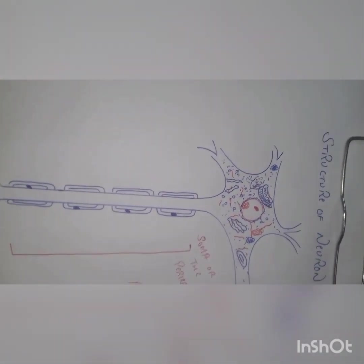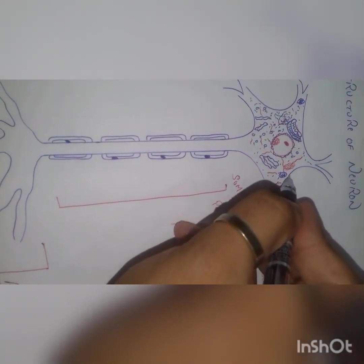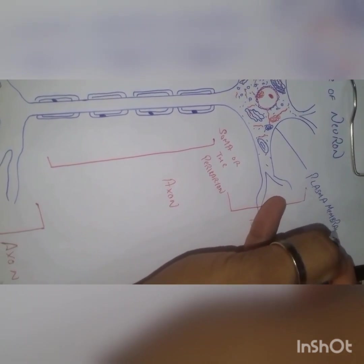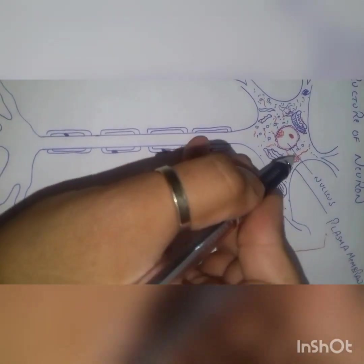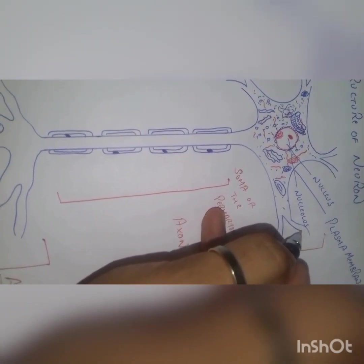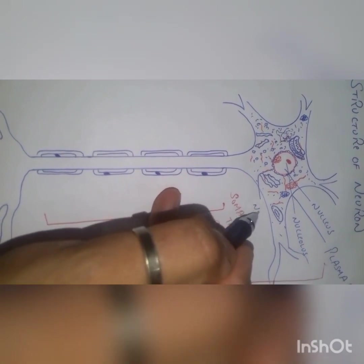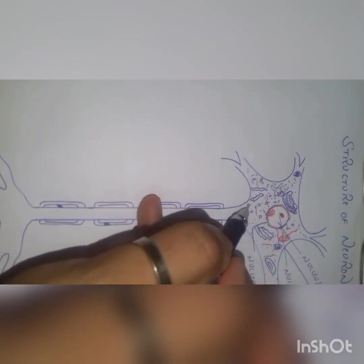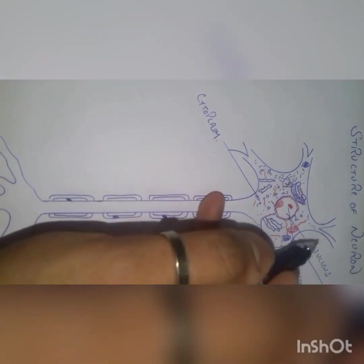The cell body consists of various structures which perform various functions. First, the membrane which surrounds the neuron is called the plasma membrane. The main director of the cell, known as the nucleus, consists of a smaller structure within it called the nucleolus, where rRNA synthesis usually takes place. The structure formed inside the nucleus comes out through a part known as the nuclear pore.